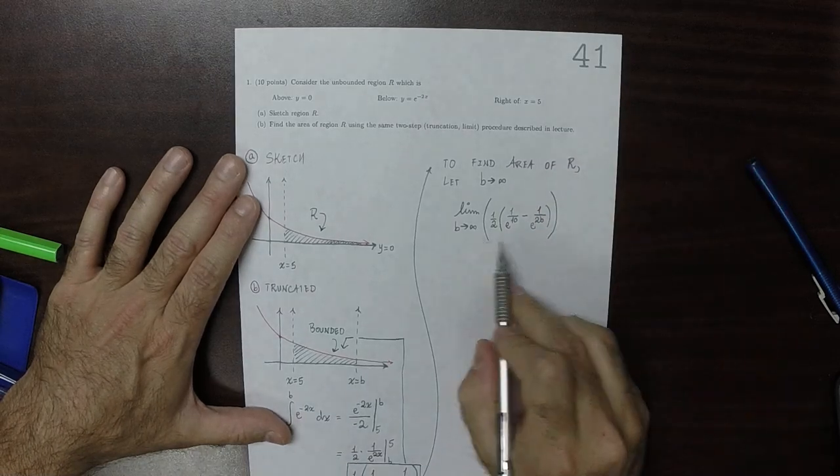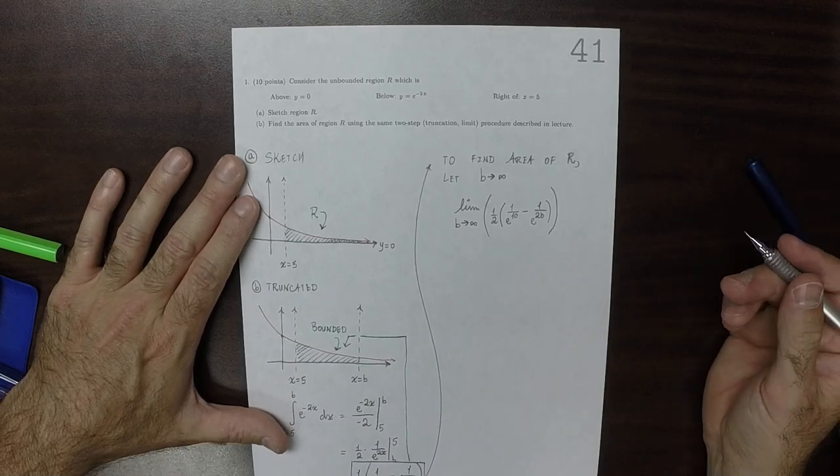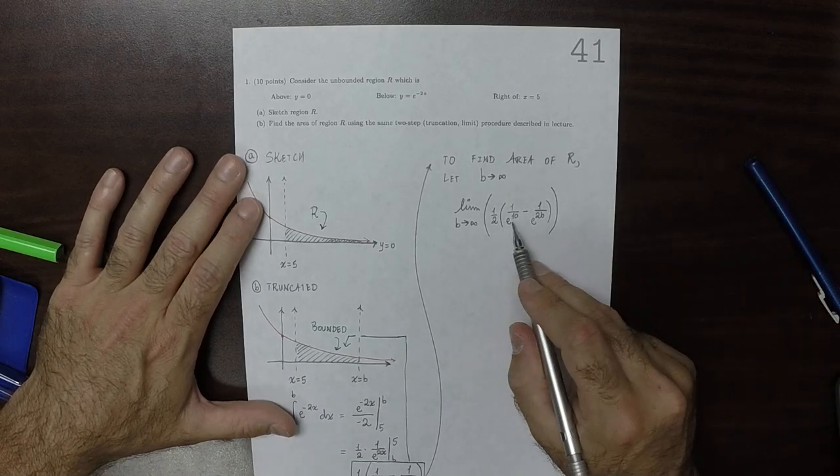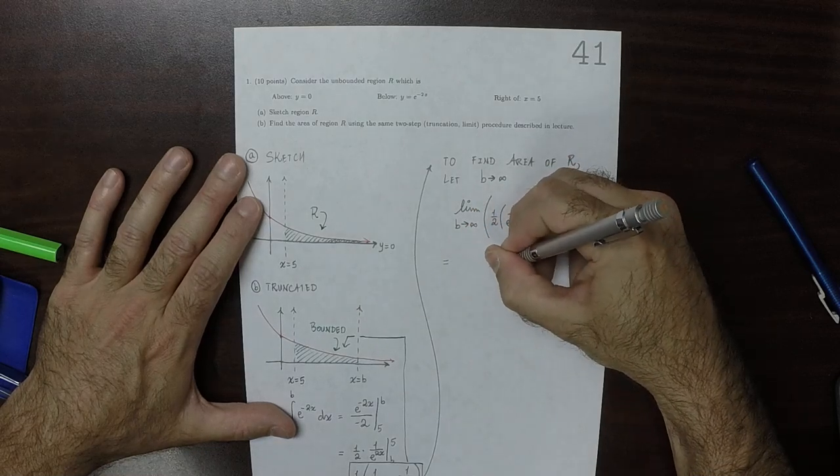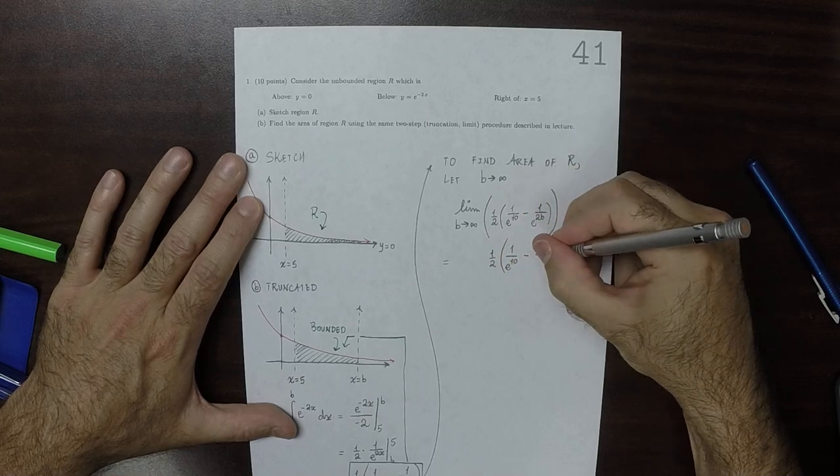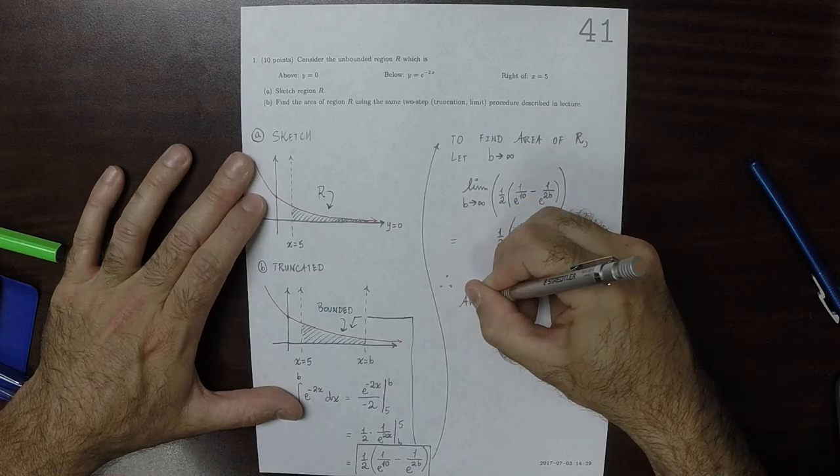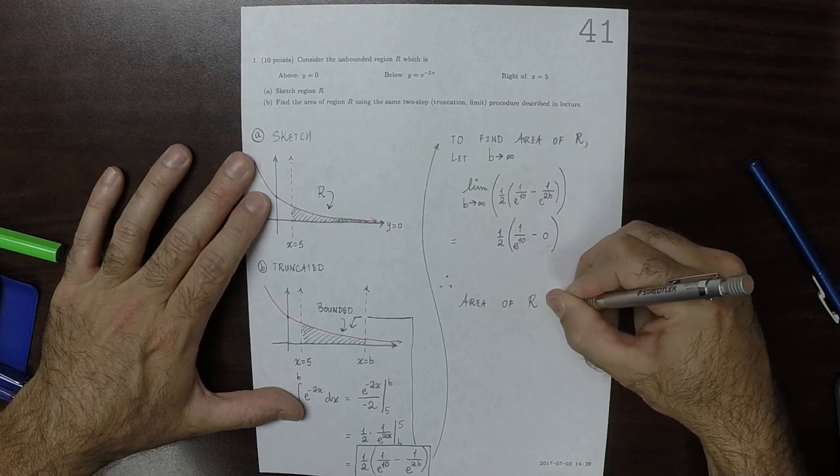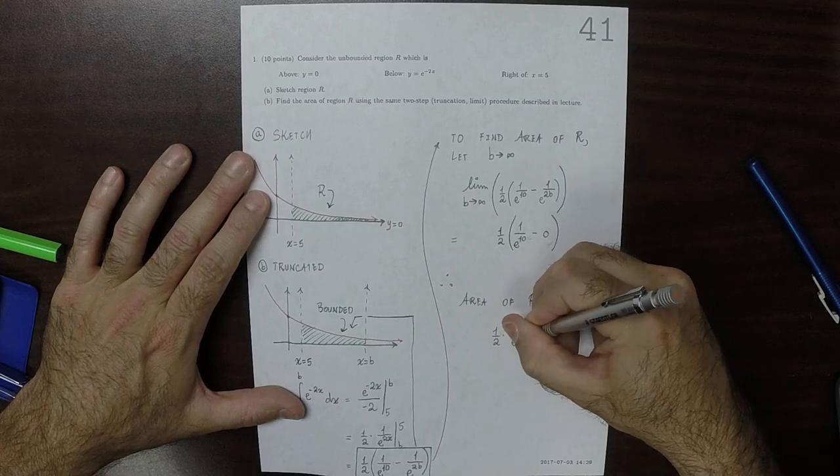Well, half is constant with respect to B, so it goes to half. 1 over exponential of 10 is constant, so it stays itself, and then this goes to 0. So this is 1 half, 1 over exponential of 10 minus 0. And therefore, the area of region R is 1 half times 1 over exponential of 10.